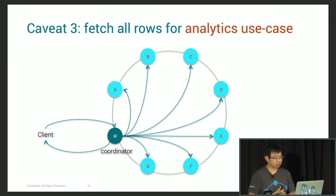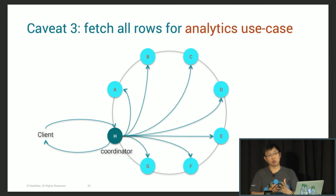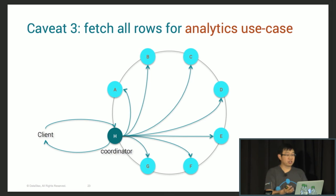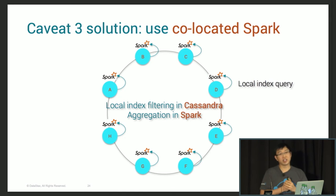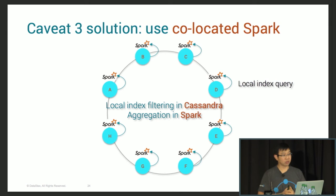Last caveat: if you want to fetch all the rows in your table using SASI to filter down for analytics use cases, I recommend using co-located Spark. It will push down the filtering on each local Cassandra node, and you will not send the data out on the network.